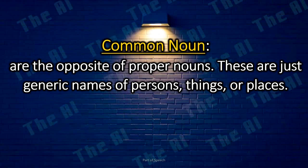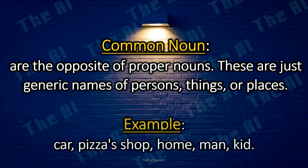Common nouns are the opposite of proper nouns. These are just generic names of persons, things, or places. Examples: car, pizza shop, home, man, kid.